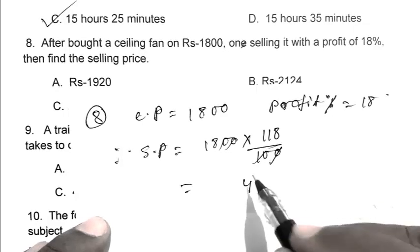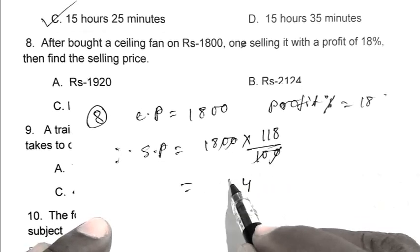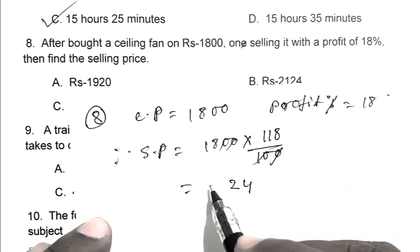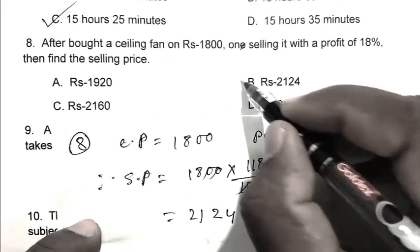So it becomes 18 times 18 is 144, and 18 times 10 is 180. Carrying forward, we get 2124. So B is the right answer.